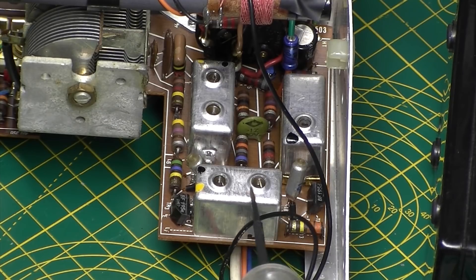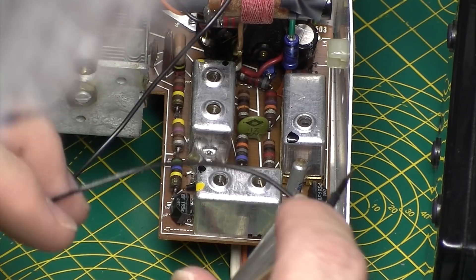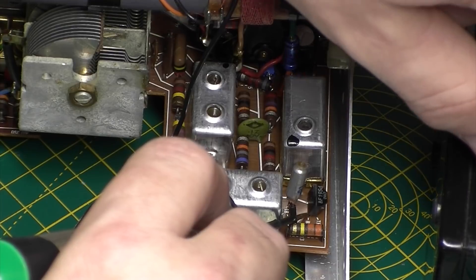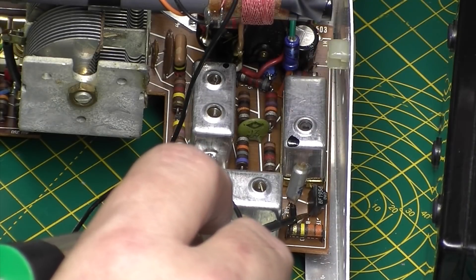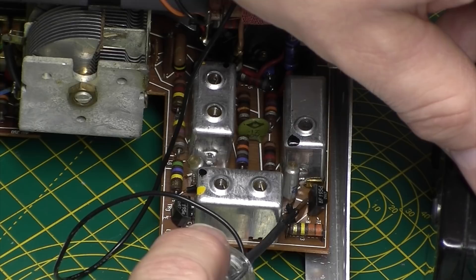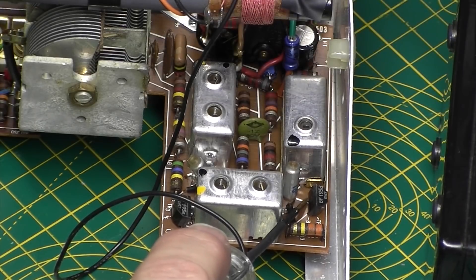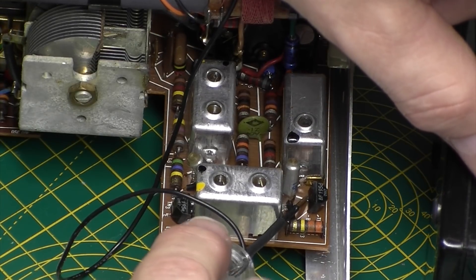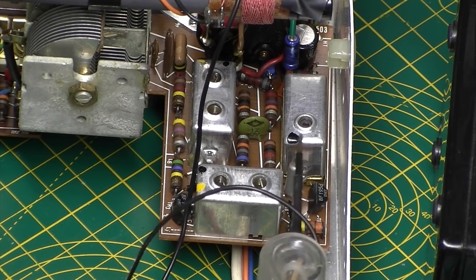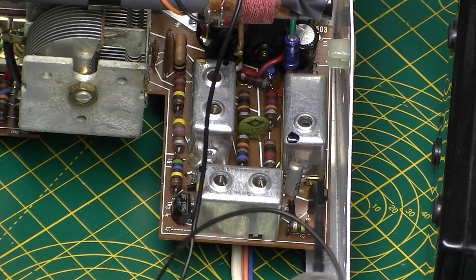Now we need to check the other side of this IF transformer, so we go to the base of TR4. We've got a very low signal there, you can hear that, so that is coming through. Let's go across to the collector. You can hear we've got a huge signal there.